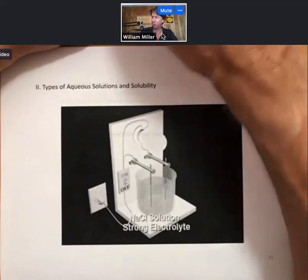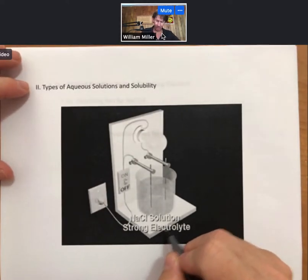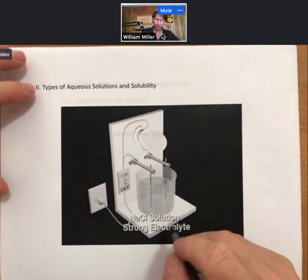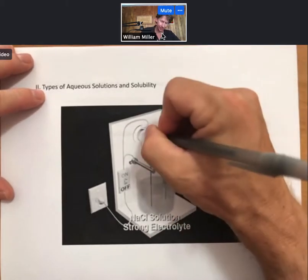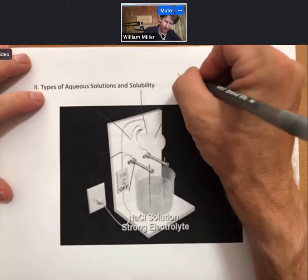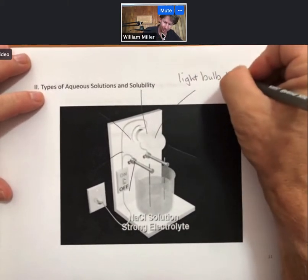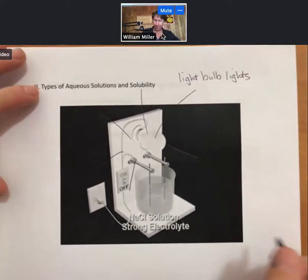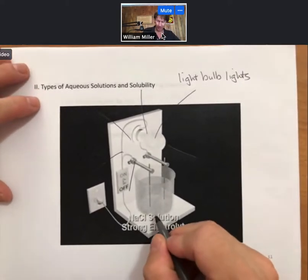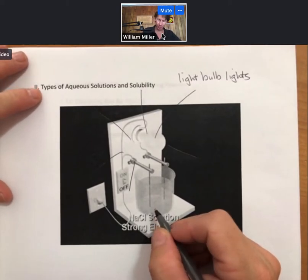All right, now let's talk about that a little bit more. In your picture here for sodium chloride, which is a solution which is a strong electrolyte, the light bulb lights up, and that is because ions in the solution, the sodium and the chloride ions, can move.